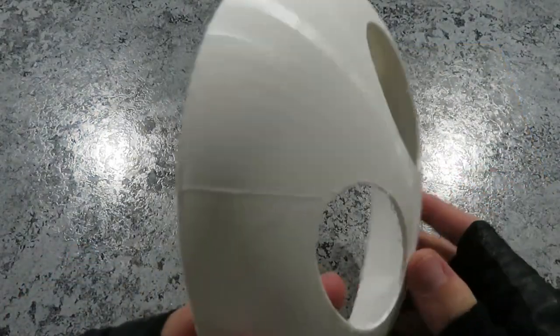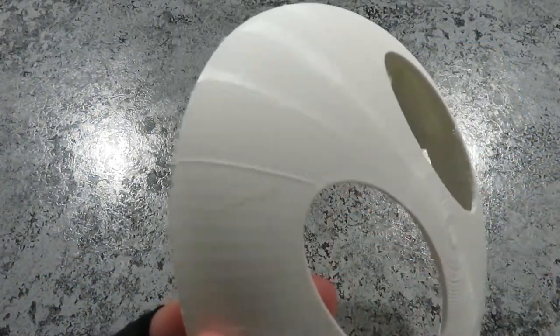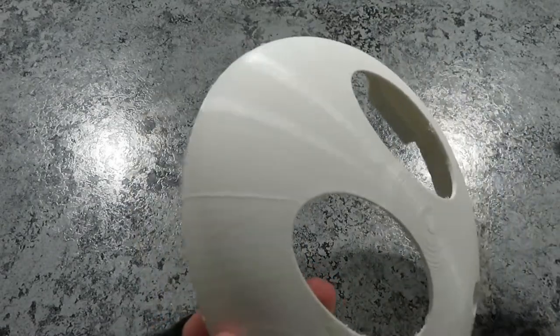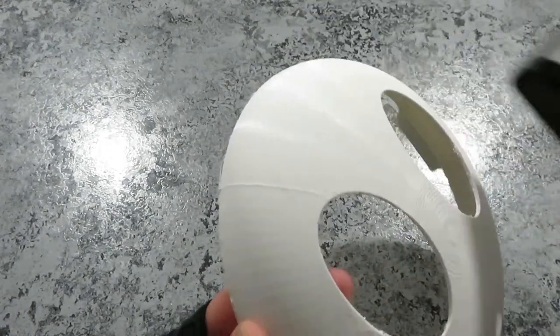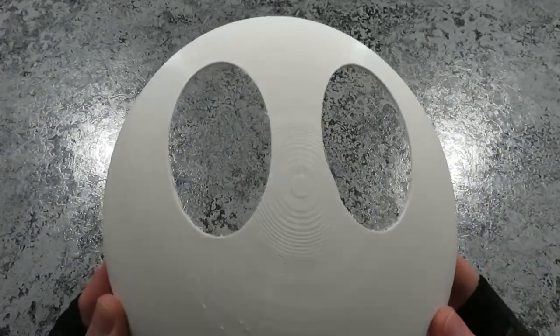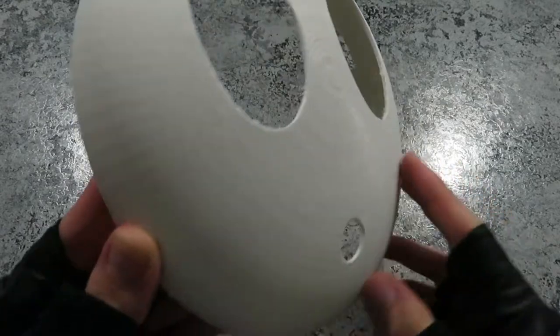So when you're sanding, I recommend focusing on a few major areas. Specifically, this seam here, and the bridge of the nose, as mentioned before. This is most likely where you're going to spend the majority of your time. Sanding against the grain of the print is probably the best way to knock lines down quickly.